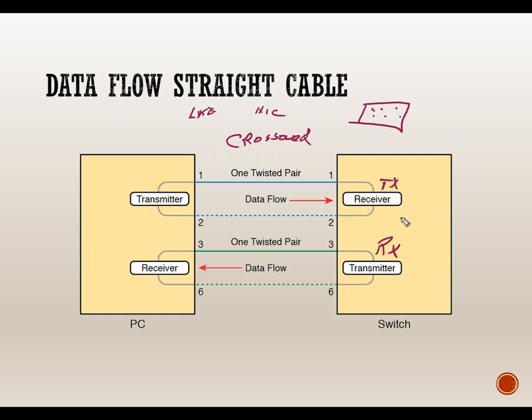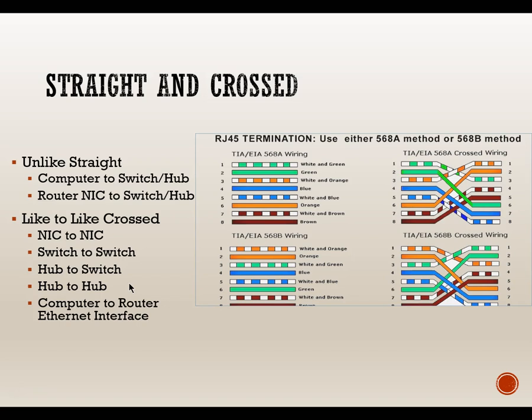Router to router, switch to switch, switch to hub — all like-to-like connections require a crossover cable. Unlike devices — NIC to switch, NIC to hub — require a straight-through cable. The rule: unlike devices use straight-through (computer to switch or hub, router NIC to switch); like-to-like devices use a crossover cable (NIC to NIC, switch to switch, hub to hub, hub to switch, computer to router Ethernet interface).